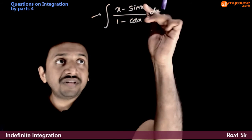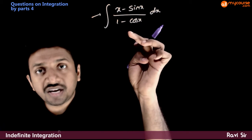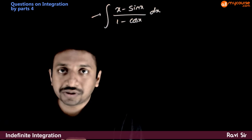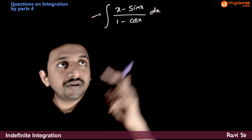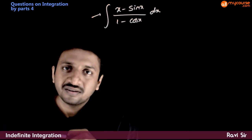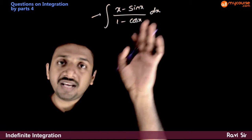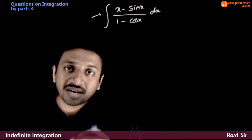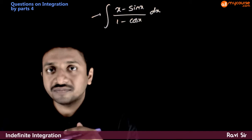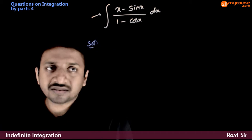Because if the differentiation is in the numerator and the function is in the denominator, then we can take advantage of substitution. But here the function is in the numerator and the differentiation is in the denominator. So differentiation has to be clubbed with dx to take advantage of it, but here that cannot be done. So I will have to think of something else.